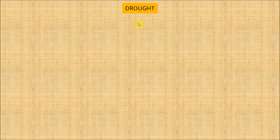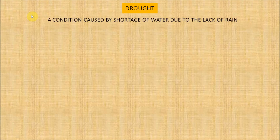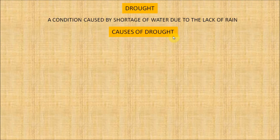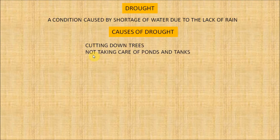Now let's see about drought. Too much water causes floods and too little water causes drought. Drought is a condition caused by shortage of water due to lack of rain for a long period of time. Causes of drought include cutting down trees, not taking care of ponds and tanks, and drawing out too much groundwater.